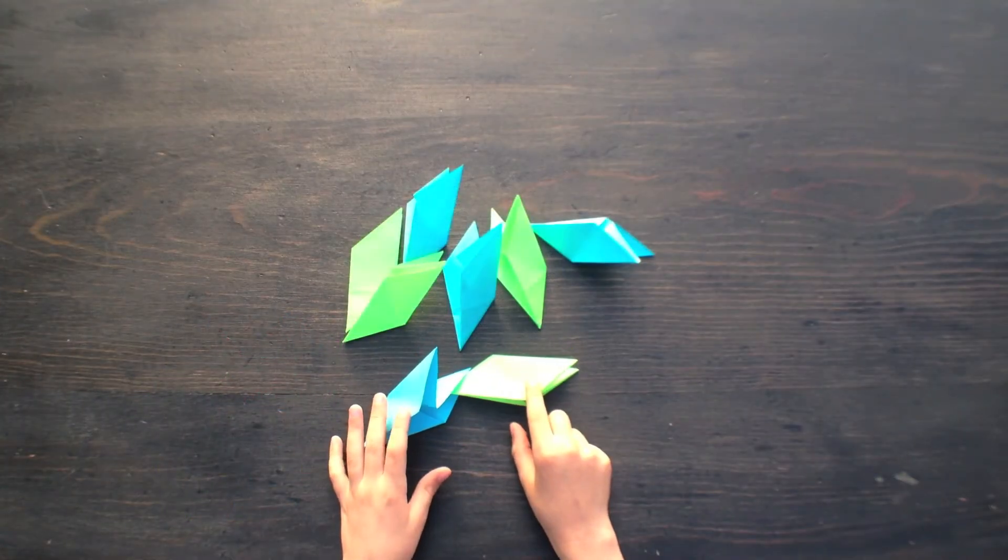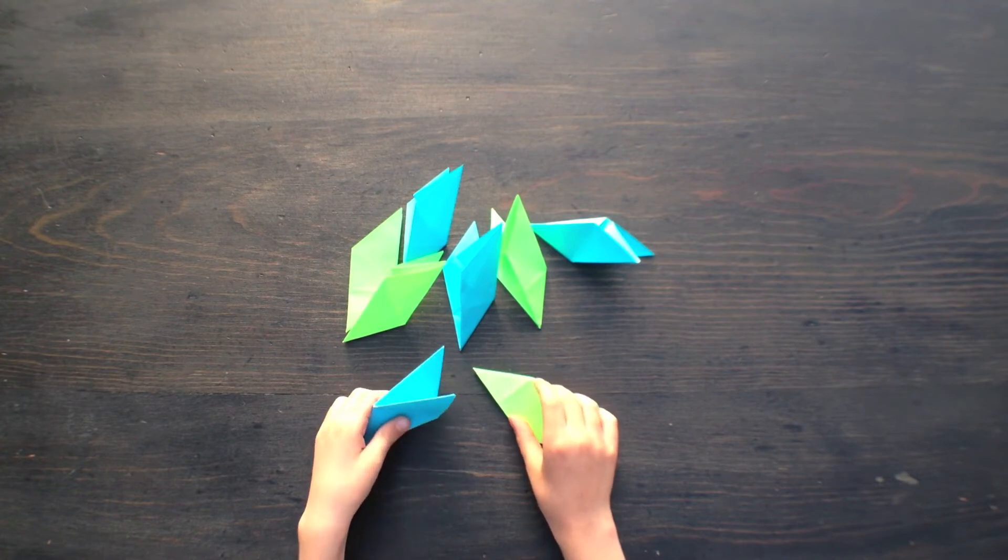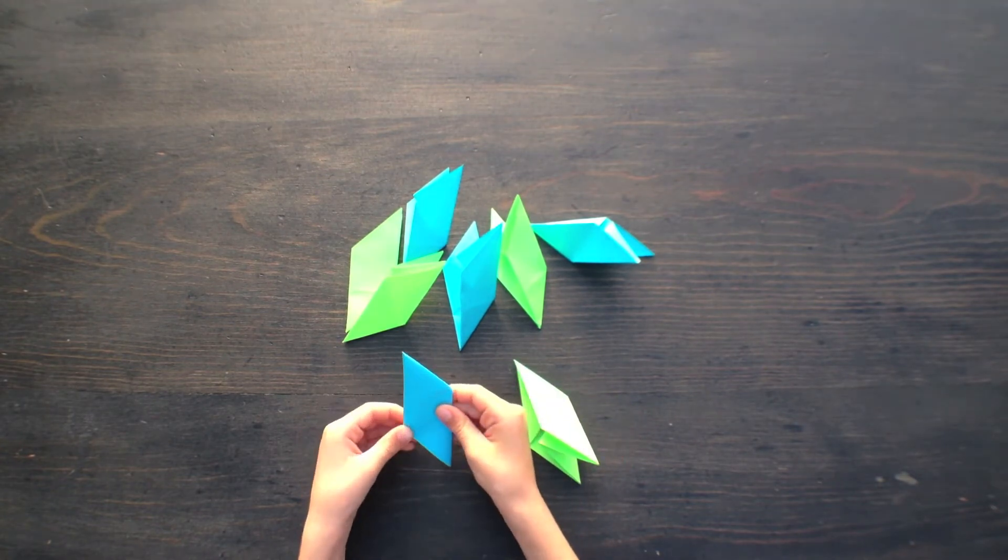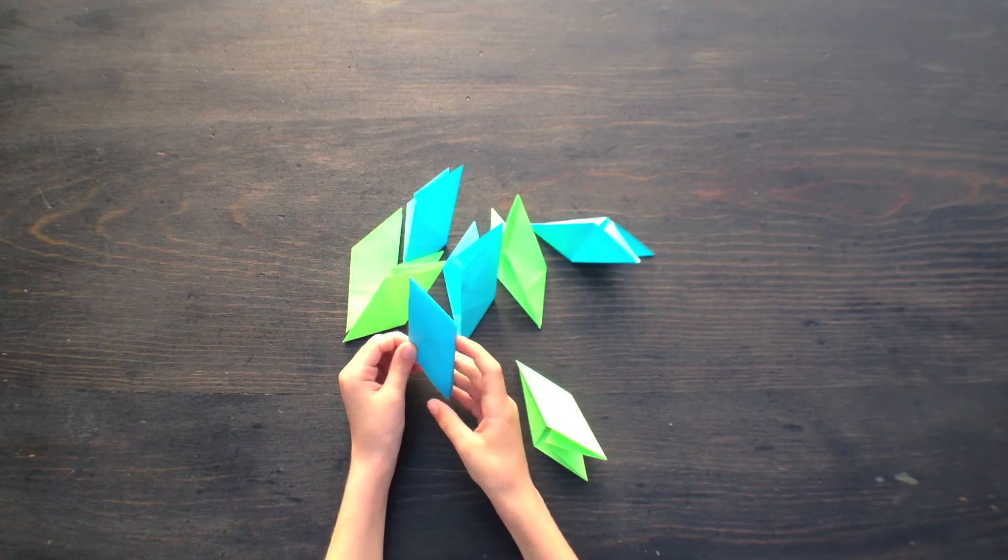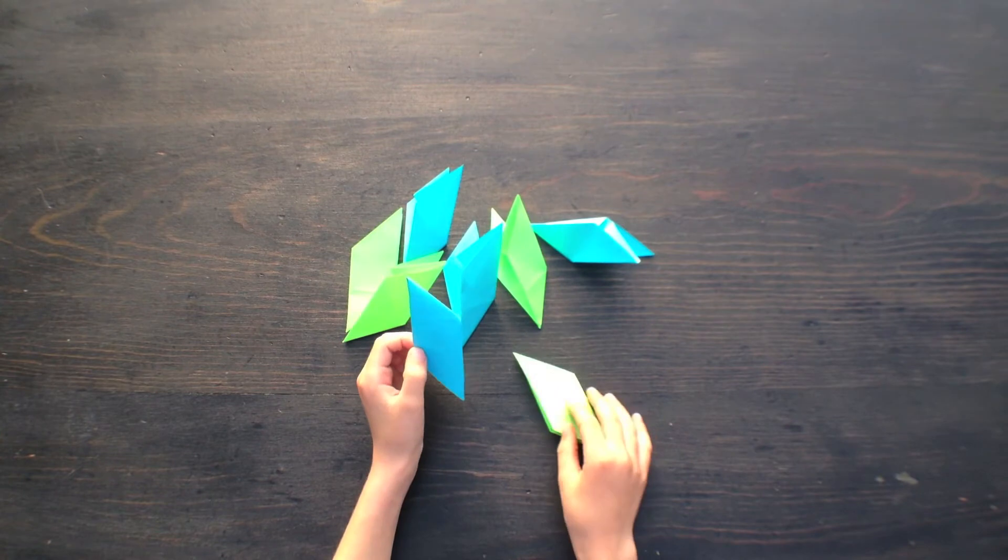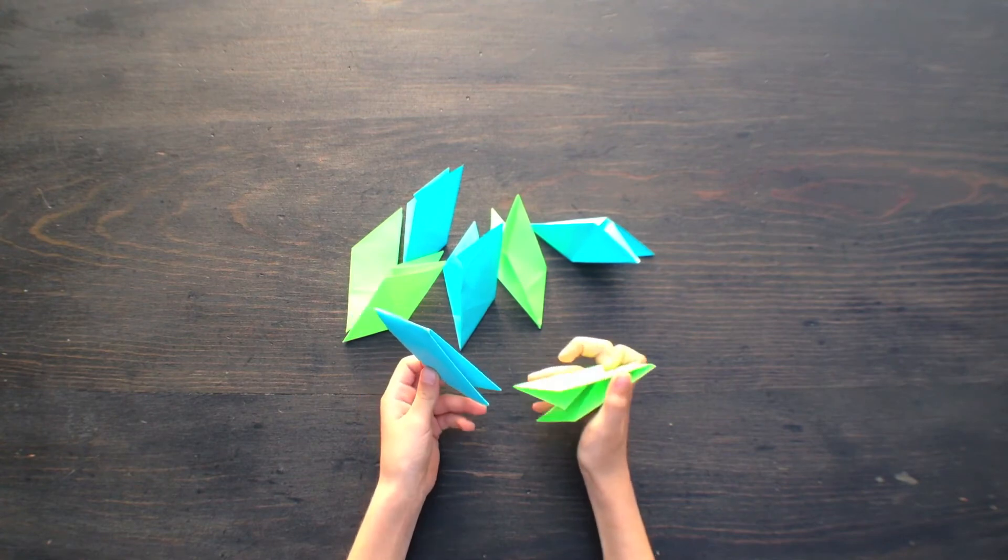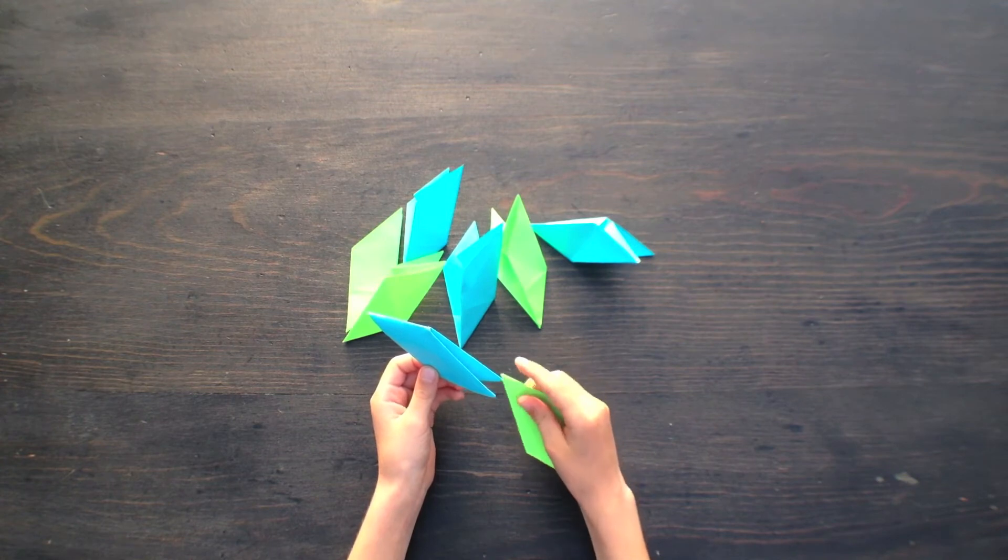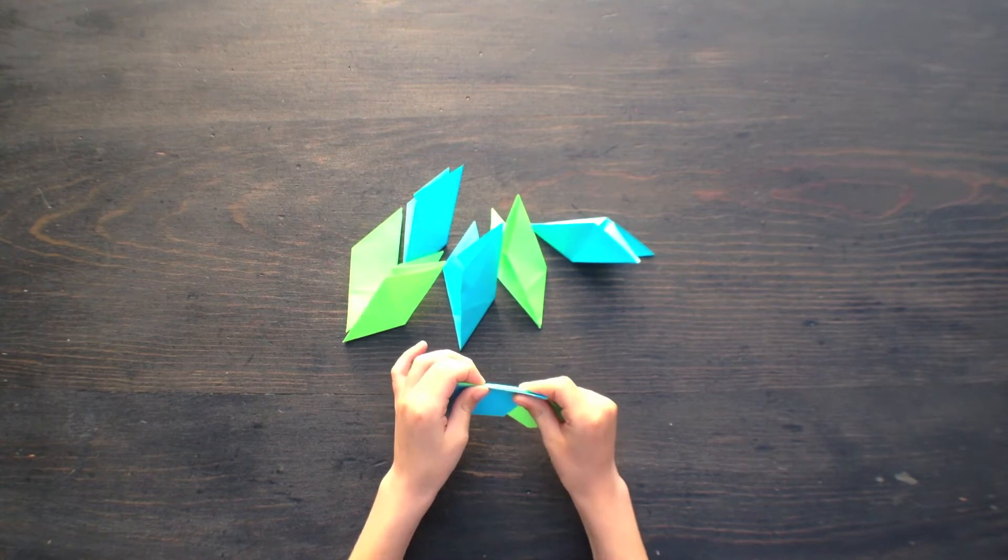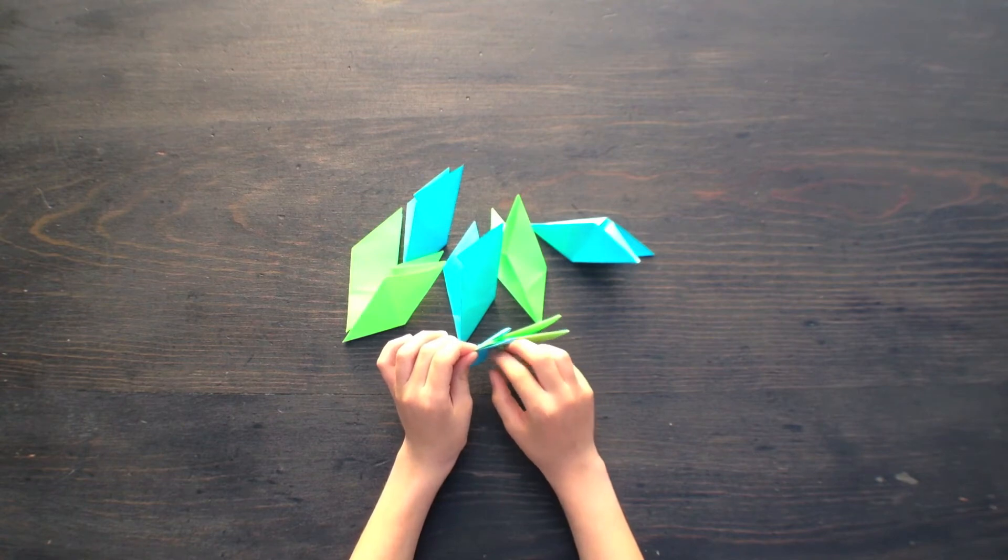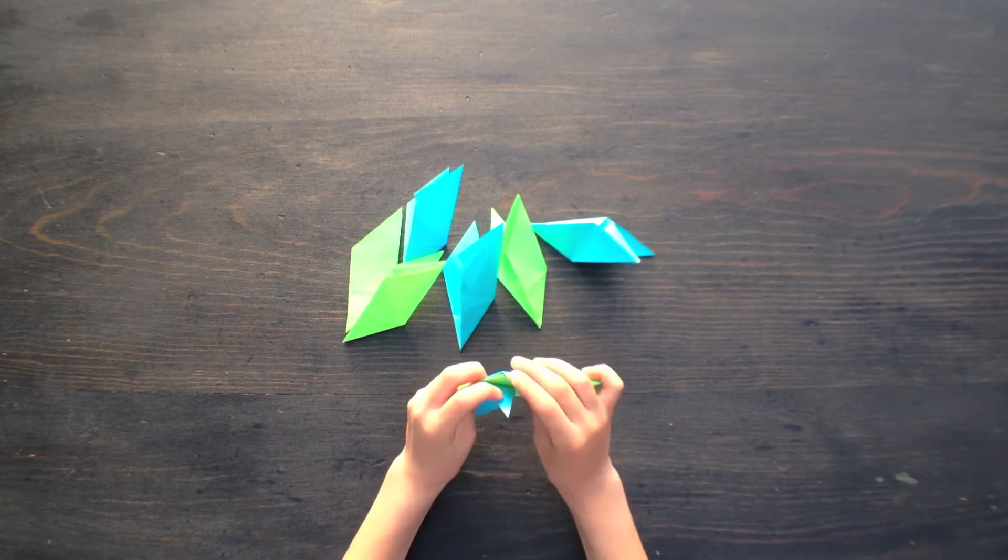Once you have eight of these, you can start interlocking them together. First, take one and make sure that this point is down here and the other is way up here, and make sure this opening is on the bottom. Take another and hold it the same way. See, this is the opening right here. Slide this part in like this until it's seated properly. See, you have these little things sticking out, so I want you to peel back this one and fold this one toward you.